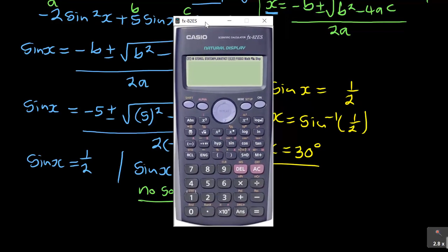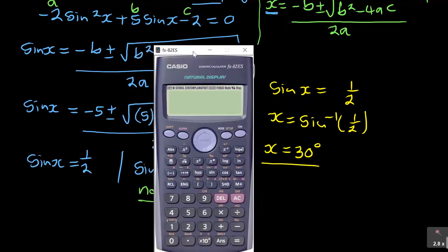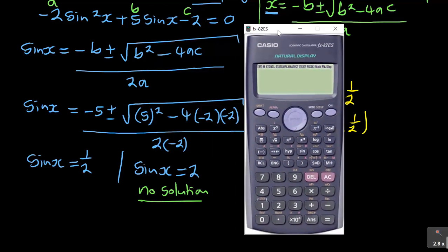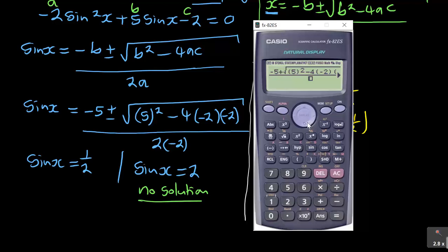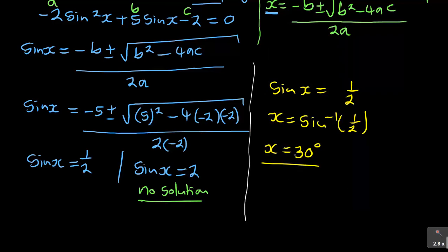Let me cross-check the quadratic formula. Using minus five plus square root of five squared minus four times negative two times negative two, all over two times negative two — it gives sine x equals one half. And with the negative sign, the other answer confirms as well. So shift sin of one half gives x equals 30 degrees, which is our reference angle.